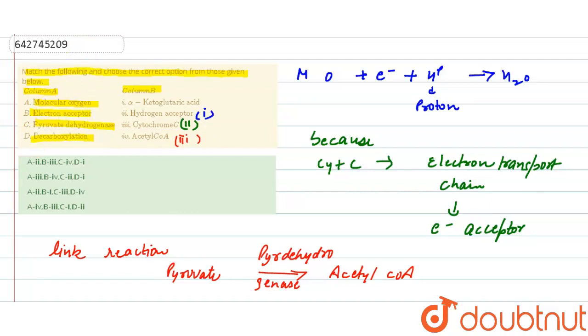Decarboxylation is involved in alpha-ketoglutaric acid, so D will be A option. Alpha-ketoglutaric acid, it is Krebs cycle. It is the step in Krebs cycle where decarboxylation will occur.